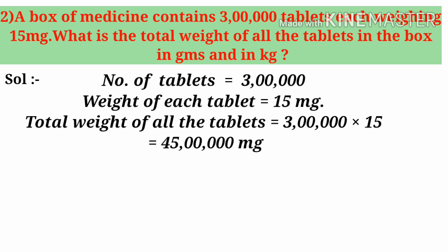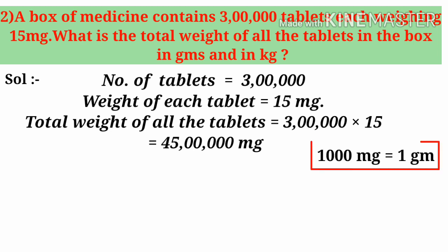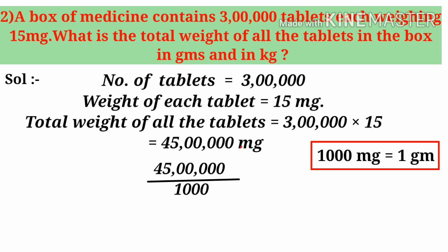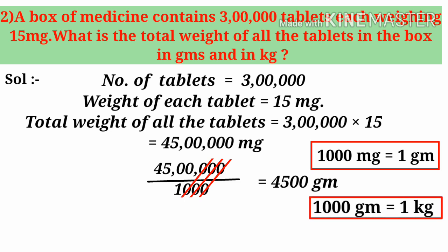Total weight of all the tablets is 3 lakhs × 15, that is 45 lakhs. Now we know that 1,000 milligrams is 1 gram, so 45 lakhs ÷ 1,000 — three zeros in numerator and denominator cancel off — giving 4,500 grams. Now, 1,000 grams is 1 kilogram, so 4,500 ÷ 1,000 — two zeros cancel — giving 45 ÷ 10, that is 4.5 kilograms. To convert from small units to big units, we have to divide.